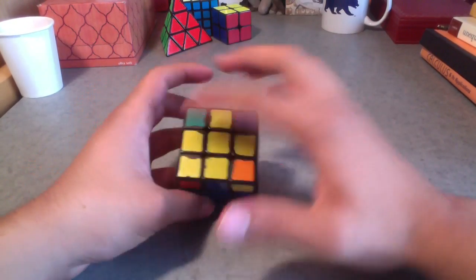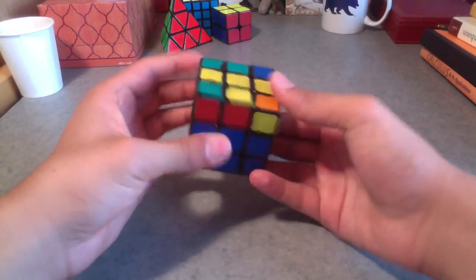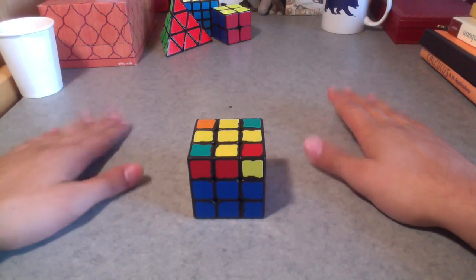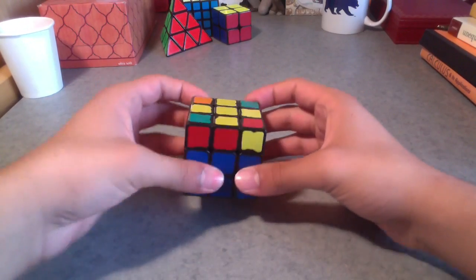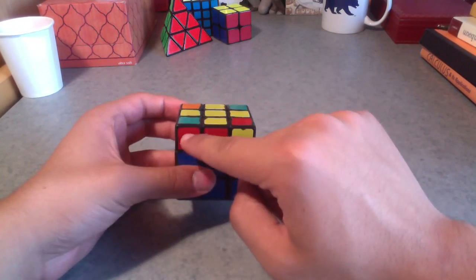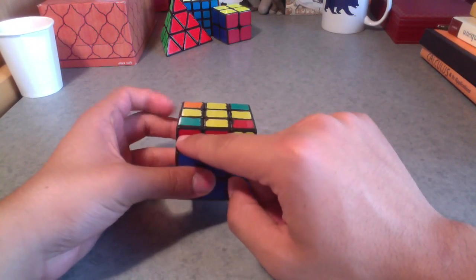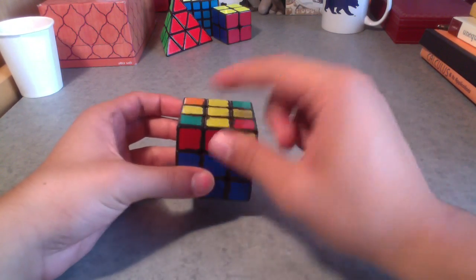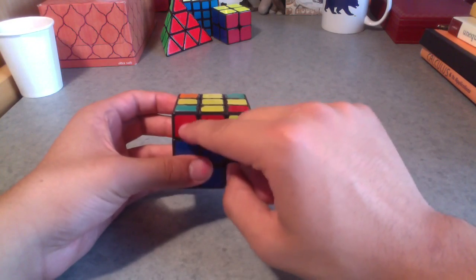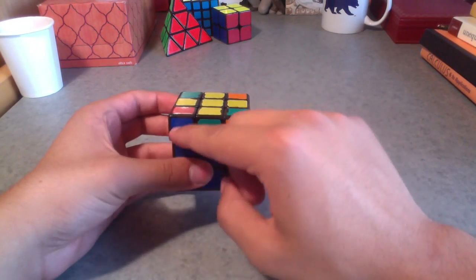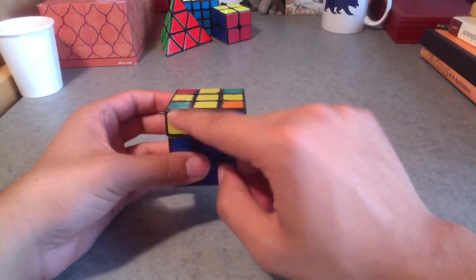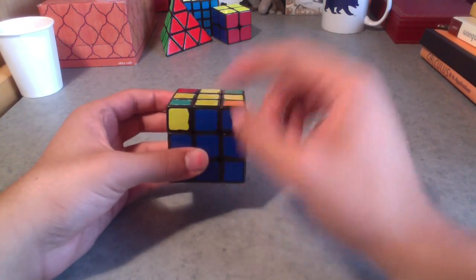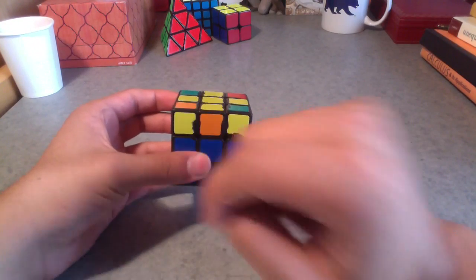The thing is, you won't always start off with the fish like this. You might have something random, like this. If you do not have a fish, there's only one thing you need to do. You always just look at this bottom left corner again, and you want to make sure that there's a yellow sticker here facing you. So here there isn't. It's a red sticker. Here it's a blue sticker. Here there is. There's a yellow sticker facing me.